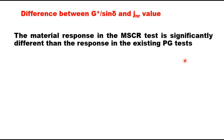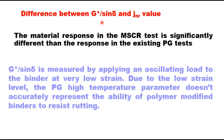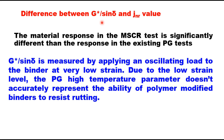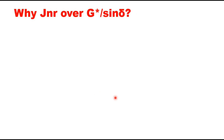The material response in the MSCR test is significantly different than the response in the existing PG test, where we determine the rutting parameter as G* / sinδ. In the performance grading system, G* / sinδ is measured by applying an oscillating load to the binder at very low strain, and due to this low strain level, the PG high temperature parameter does not accurately represent the ability of polymer modified binders to resist rutting. Therefore, JNR is considered to be superior to G* / sinδ.